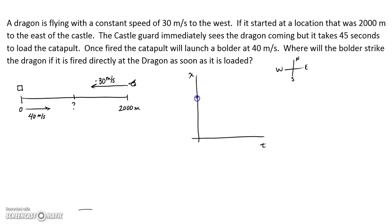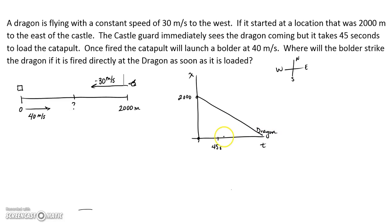On the position-time graph, my dragon started at 2,000. My other object — the boulder — started at 0, but it started 45 seconds later, so it started at the 45-second mark. The dragon was going in the negative direction, so we get a downward line for the dragon, and then the boulder goes like this.